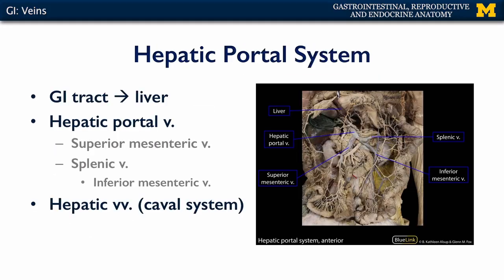When we turn our attention to the GI viscera, we can see corresponding splenic veins, inferior mesenteric veins, and superior mesenteric veins all coming together. Typically, where the splenic vein conjoins with the superior mesenteric vein, we call that vessel the hepatic portal vein, or just the portal vein, which is then conducted up the hepatoduodenal ligament of the lesser omentum to the porta hepatis.